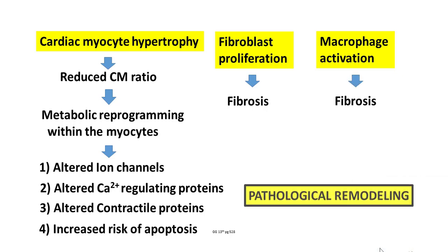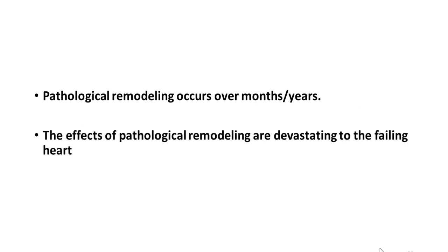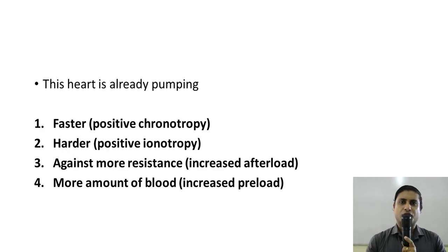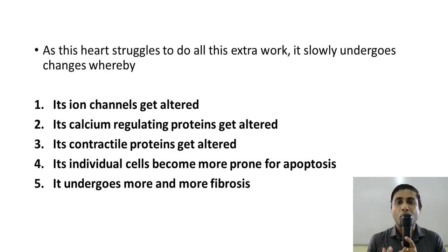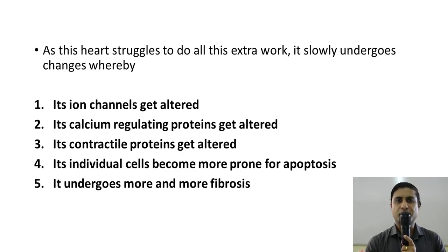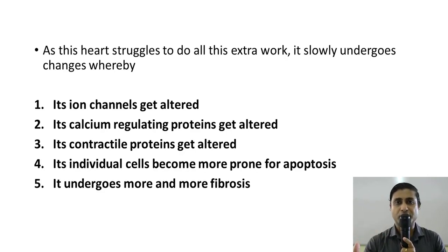All these changes together are what we refer to as pathological remodeling. Pathological remodeling occurs over a period of months or even years and has absolutely devastating effects on the failing heart. This heart is already pumping faster, harder, against more resistance, and pumping a higher volume. As the heart struggles to do all this extra work, its ion channels get altered, its calcium-regulating proteins get altered, its contractile proteins get severely altered, its individual cells become prone to apoptosis, and it undergoes more and more fibrosis — becoming stiffer, less perfused, and more prone to arrhythmias.